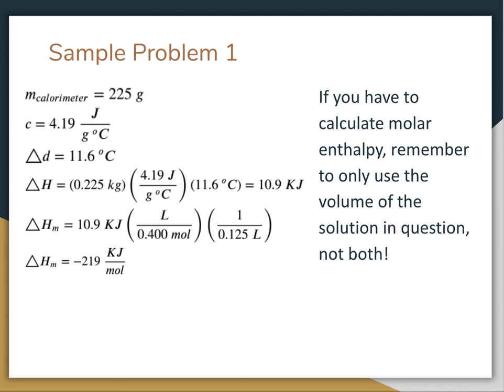So we can then unit cancel our way to kilojoules per mole. We want kilojoules on top. We want moles on bottom. So we're going to divide the kilojoules by the moles. And then we're going to divide once more by the liters in order to cancel out the liters that we get from the concentration. And that gives us overall a molar enthalpy of 219 kJ/mol.